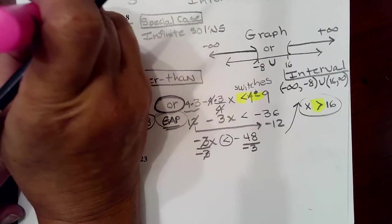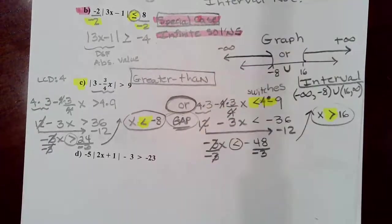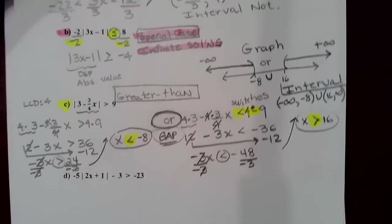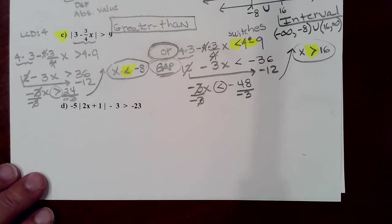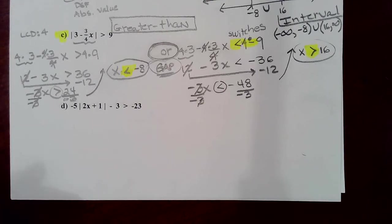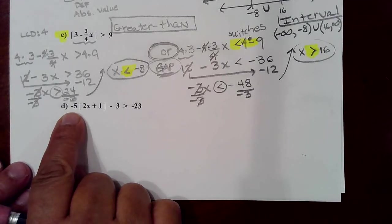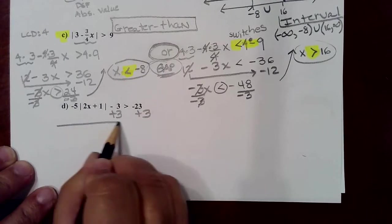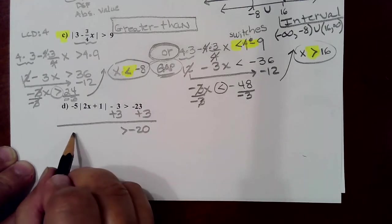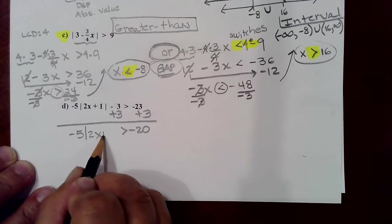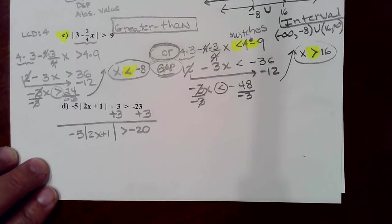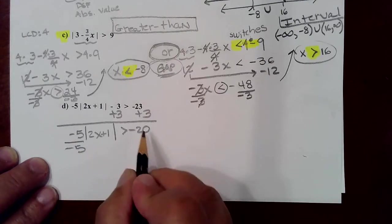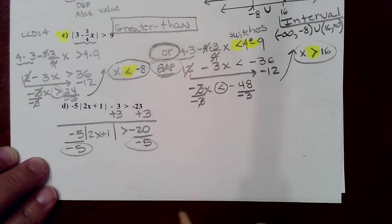Part B was a special case of infinite solutions. Part D is a case where you can be tricked into thinking it's a greater than case. The way you can tell it's going to switch is by that negative multiplier right there. The first thing you're going to do is add 3 to both sides, giving you negative 20 on this side and negative 5 times the absolute value of 2x plus 1. At that point you're going to divide off the negative 5, and because you're dividing by a negative, it's going to switch direction.